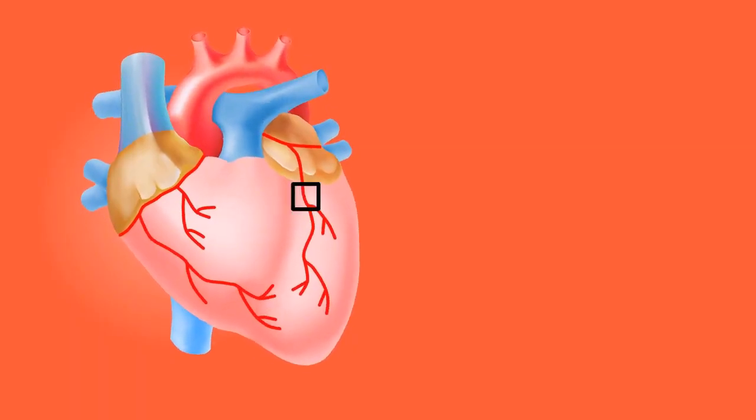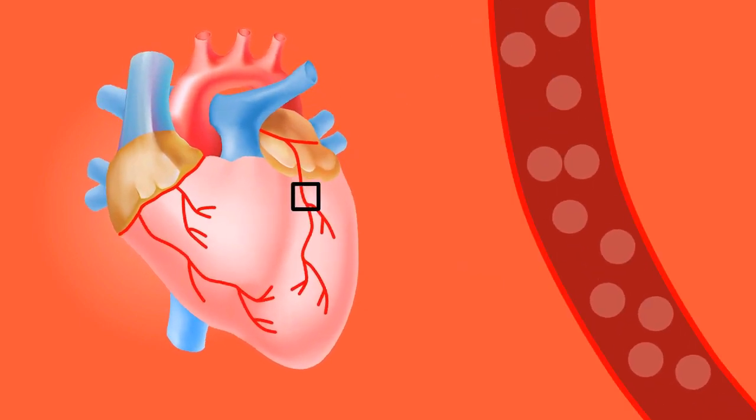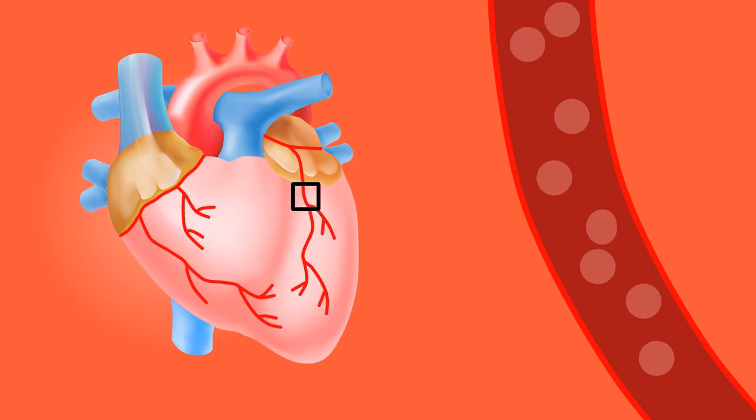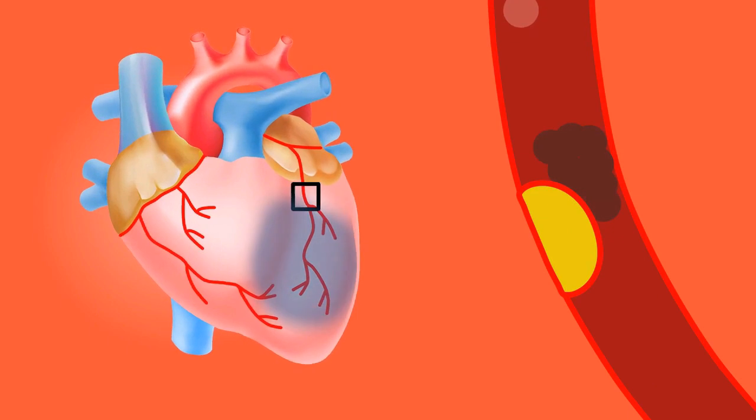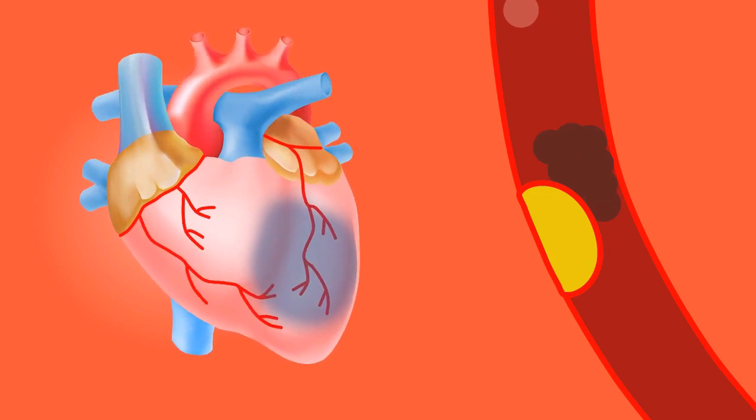Our heart also needs blood supply for its own survival, and there is a network of arteries and veins around the heart. The arteries that carry blood and nutrition to the muscles of the heart get blocked due to various reasons. Because of this blockage, that portion of the heart gets weak, and if the blockage prolongs, that section of the heart can die. Because of this, the heart stops pumping or becomes weaker and weaker, and this can lead to the death of the person.